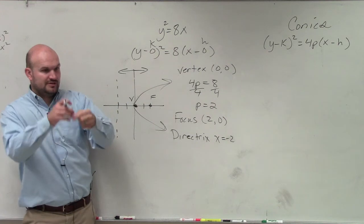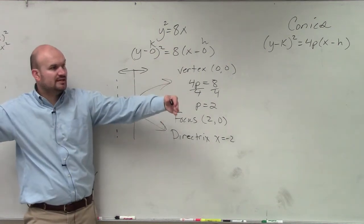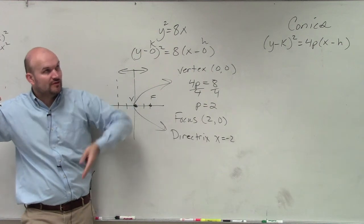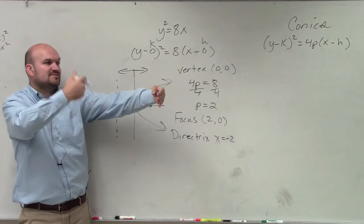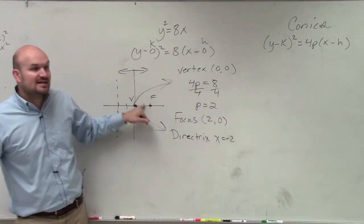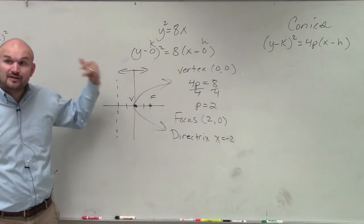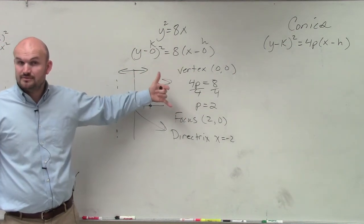So remember, if you look at your thing, p was to the focus to the directrix. Opposite of p was to the—I'm sorry, from the vertex to the focus was p. Opposite of p was from the vertex to the directrix. So you just go in the opposite direction. But notice how the distance from the vertex to the focus is the same as the vertex to the directrix. They're just in opposite directions.